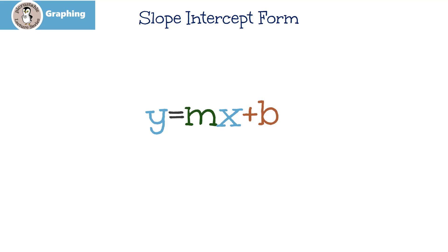First of all, the slope-intercept form is y equals mx plus b. The m is actually the slope. And remember, the slope is rise over run. We always want to write it as a fraction.